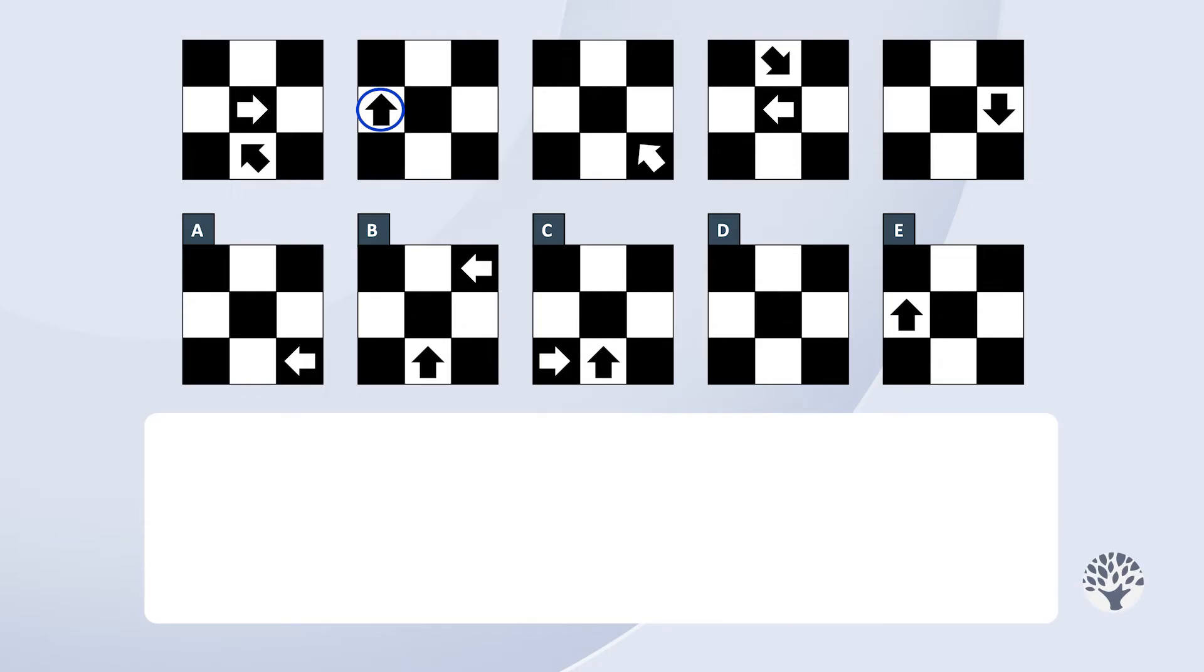That pattern works between frames three and four if we assume that the black arrow is in the top left and pointing to the right in frame three, thus positioning itself in the top centre in frame four.